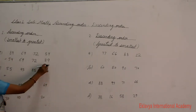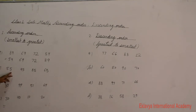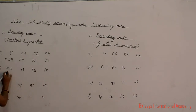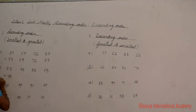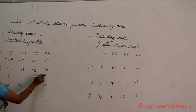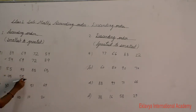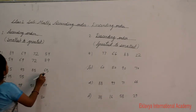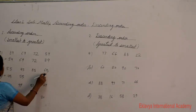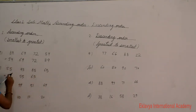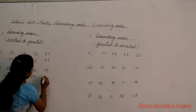Next example: 55, 45, 85, and 65. Which one is the smallest number? The smallest number is 45. After 45 the next is 55, then 65, and then the greatest number is 85.